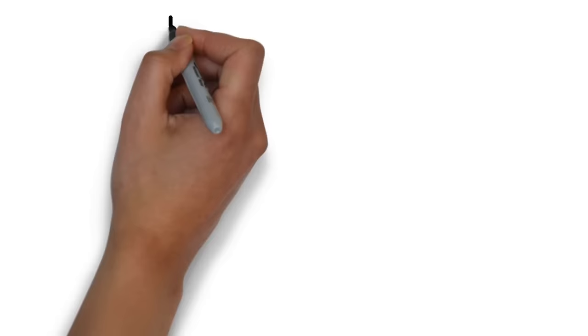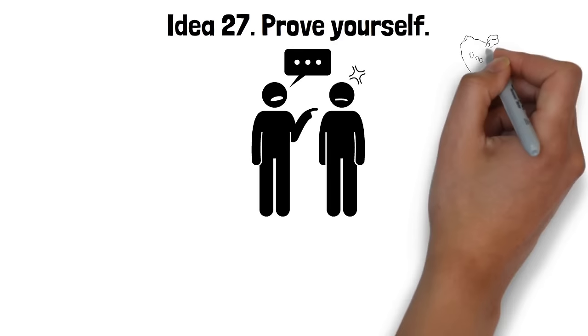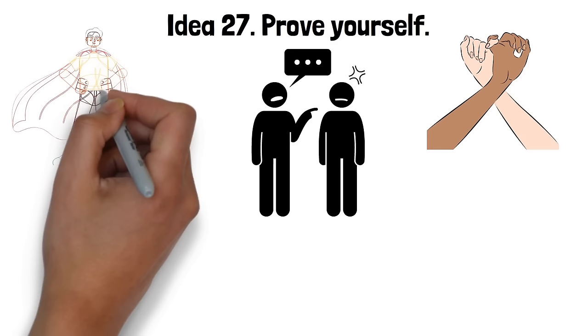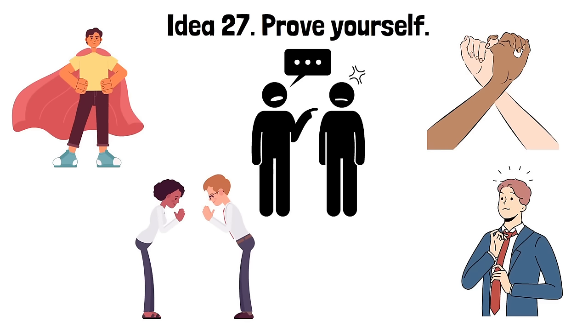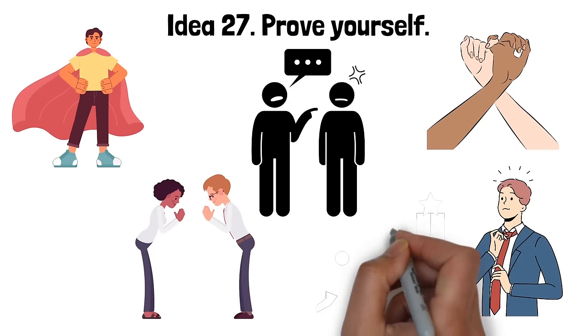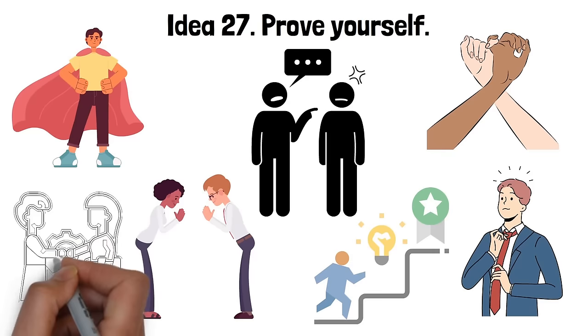Idea 27. Prove yourself. Proving yourself in the context of seduction implies demonstrating your worth and value to the person you're trying to attract. It's not merely about making promises or professing your feelings. Instead, it's about showing through your actions and behavior that you're worthy of their attention and affection. You can prove yourself by being reliable, understanding and respectful, as well as by demonstrating qualities they admire or desire, such as confidence, intelligence or kindness. You might also show your commitment to them by investing time, effort and emotions in your relationship. This approach can help foster trust, admiration and respect, enhancing your attractiveness and appeal in their eyes.